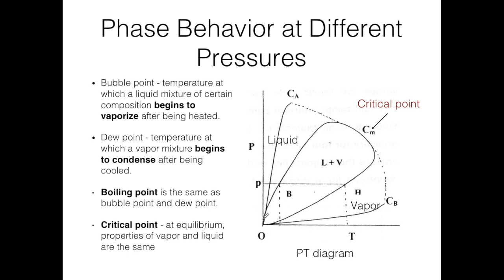Looking at this diagram, we see multiple lines: the liquid line, the vapor line, and the liquid-plus-vapor region. Anything above the vapor line but below a certain boundary is in the vapor phase, while anything below that line but above another line is in the liquid phase. If a composition falls between the two lines, it is a mixture of liquid plus vapor.